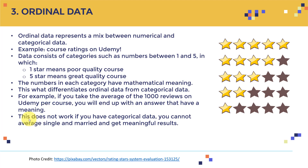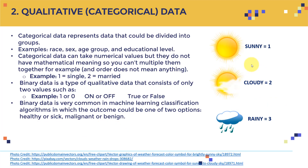This mathematical meaningfulness does not work with categorical data. You cannot average single and married and come up with a meaningful result. Similarly, you cannot sum sunny and cloudy and come up with something in between — it simply doesn't work and has no meaning.